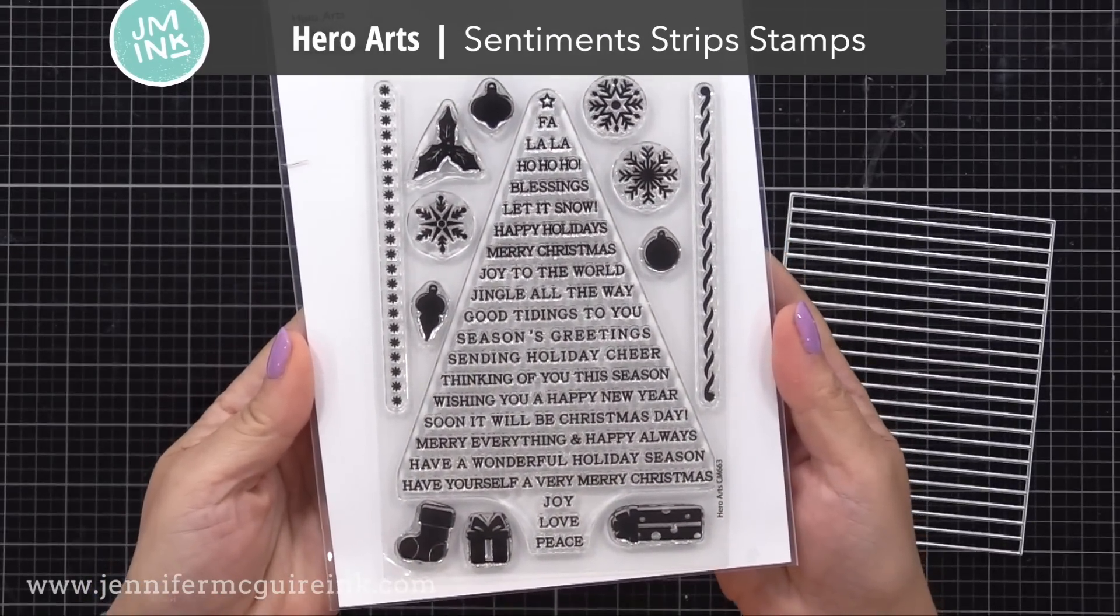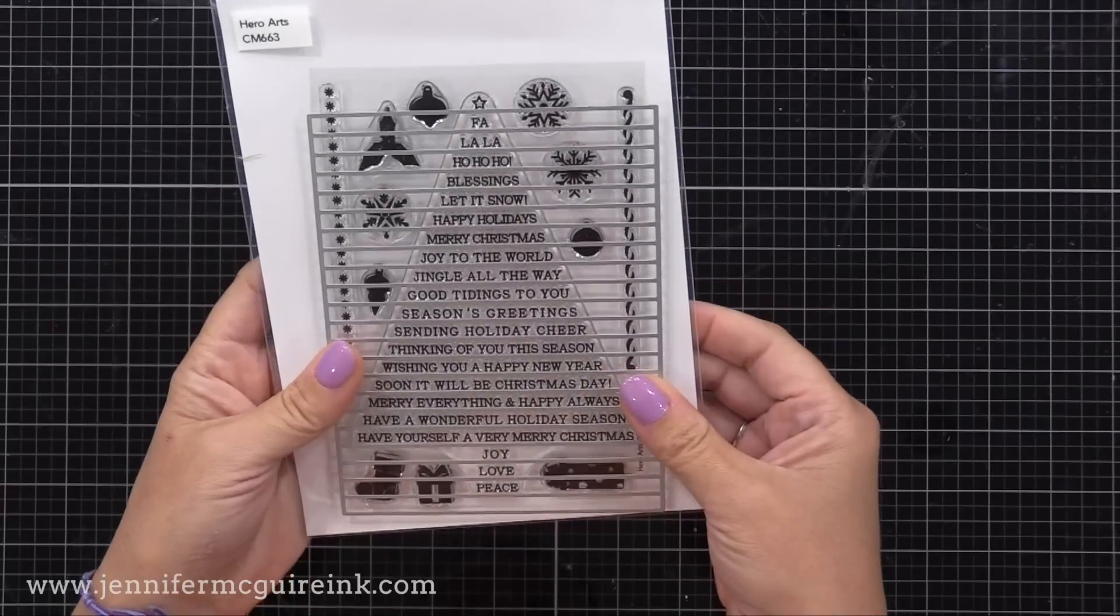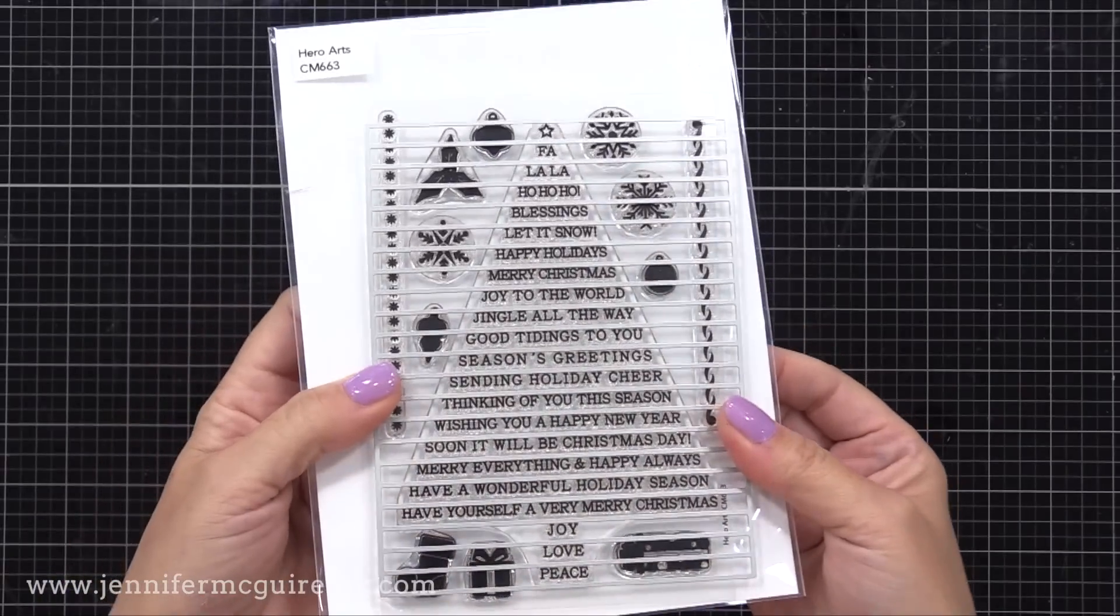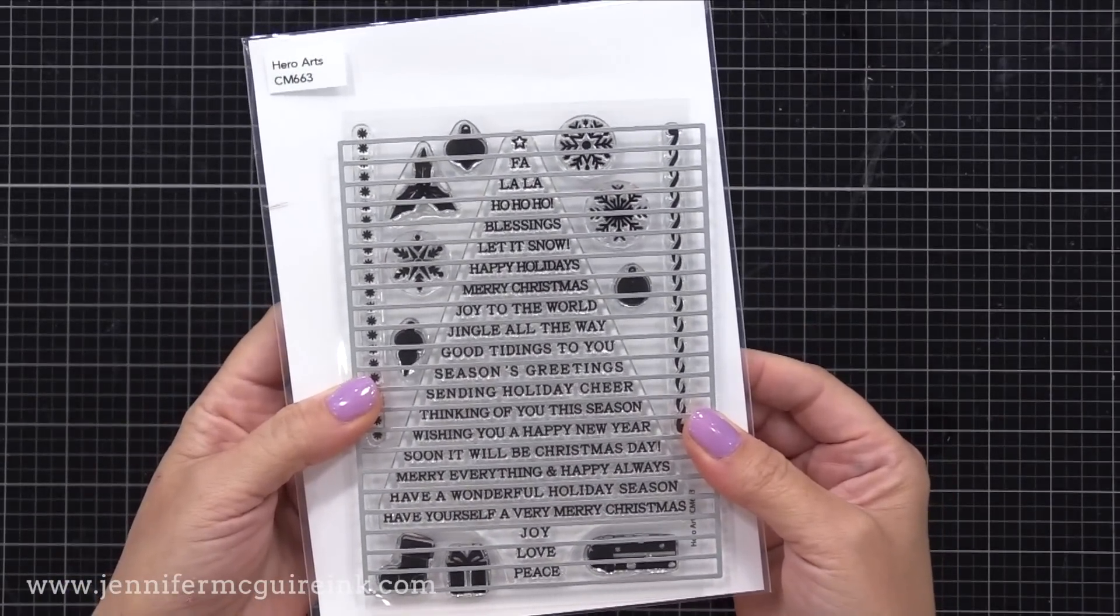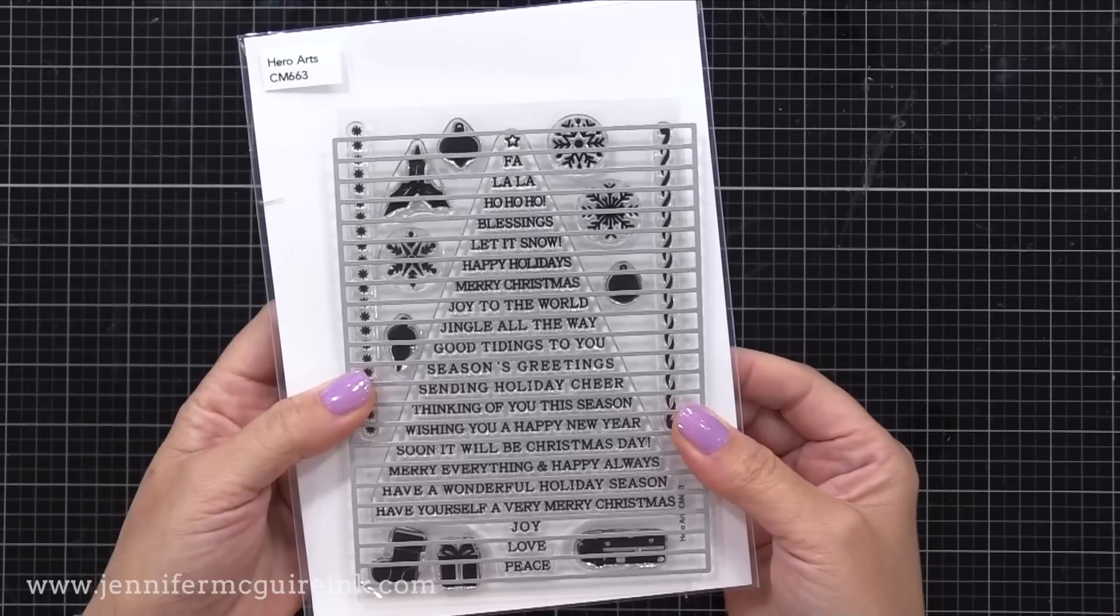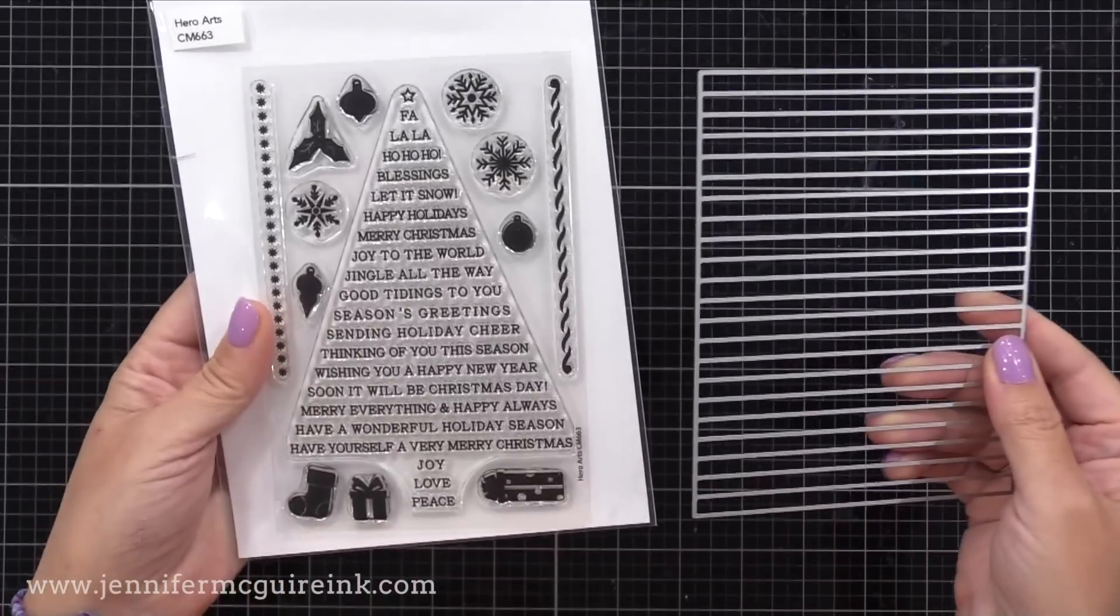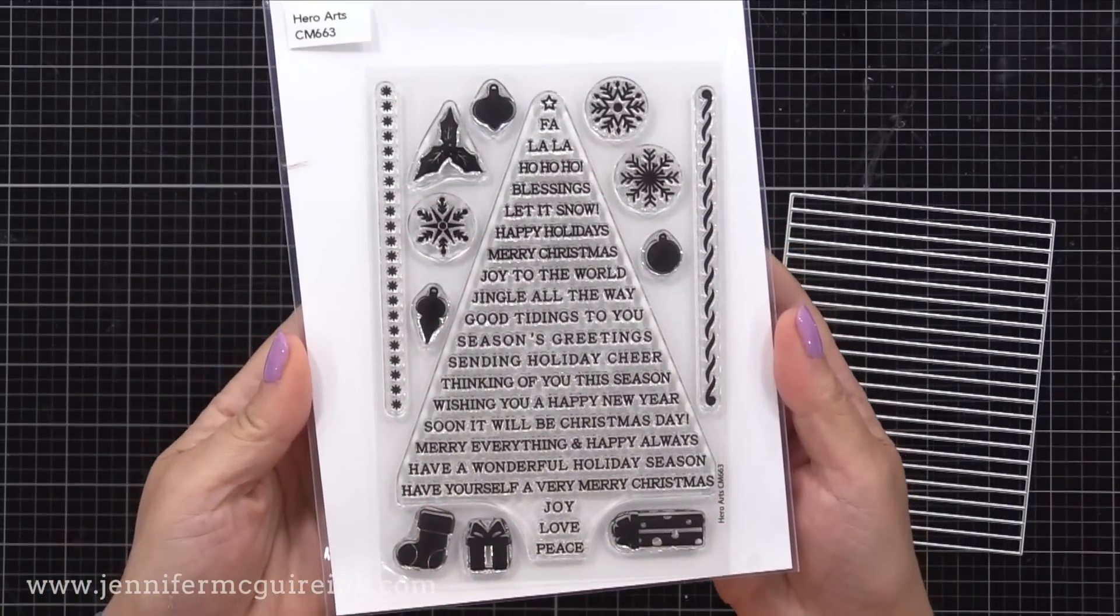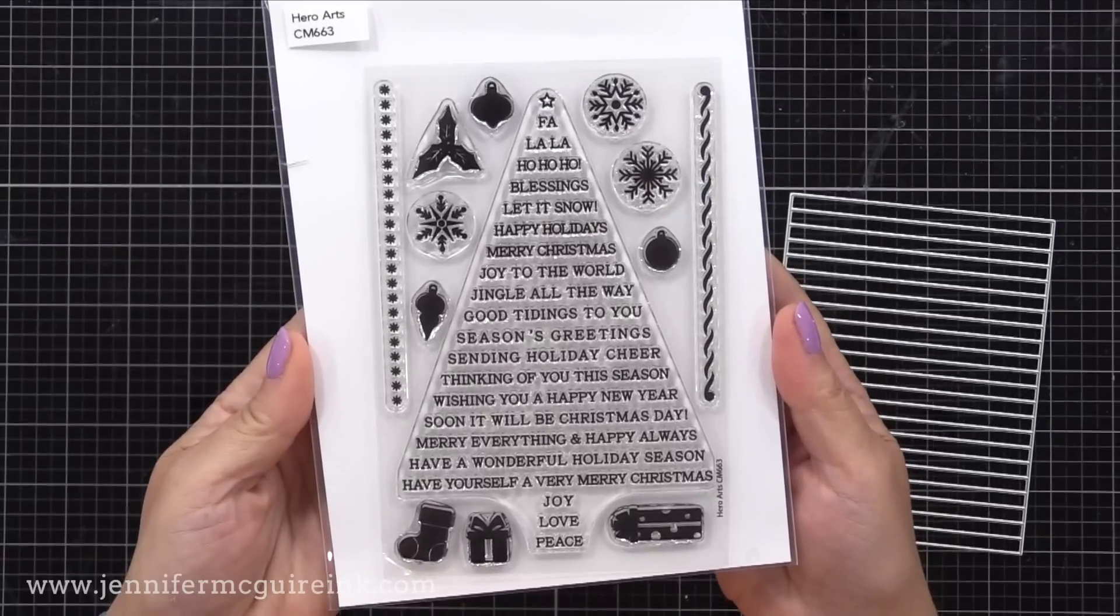In addition to the kit, I'll also be using this Hero Arts Sentiment Strip Die. This is a four and a quarter by five and a half inch background die that creates a bunch of strips. I will be demonstrating a technique with it today, but you do not need this die to do the technique, and I'll talk about that throughout the video.